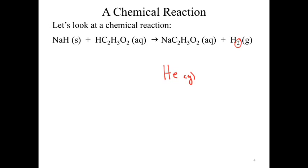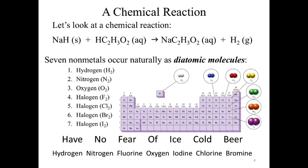Are there other elements that also do that? Oxygen does it. Just hydrogen and oxygen? No — there are a whopping total of seven diatomic elements. You need to memorize those seven: hydrogen, nitrogen, oxygen, fluorine, chlorine, bromine, and iodine — the last four are called halogens. There are a couple different ways to memorize that. I'd presume your teacher expects you to have them memorized.